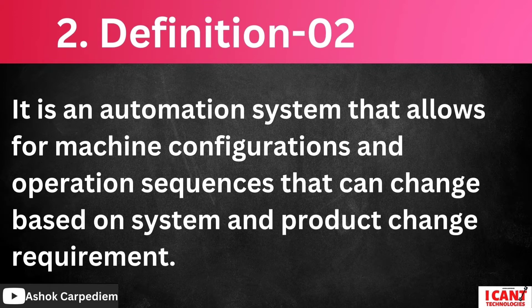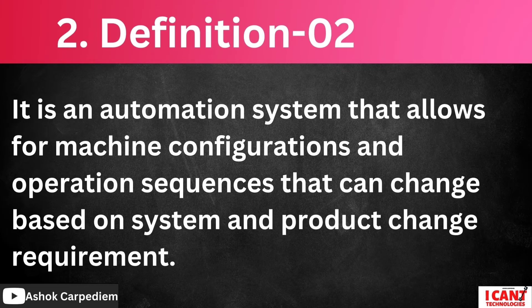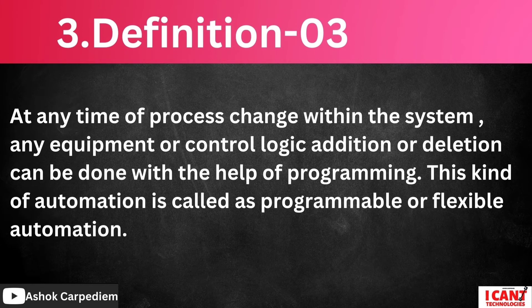The second definition: it is an automation system that allows for machine configurations and operation sequences that can be changed based on the system and product change requirement. Like if I want to change the batch system by different products, we will use this one.